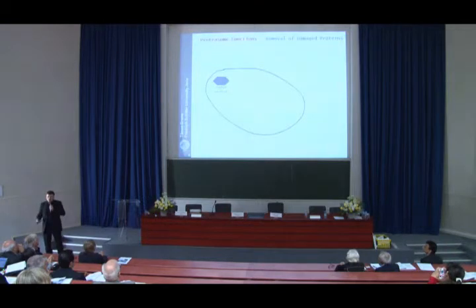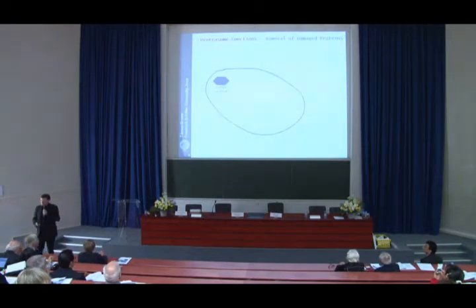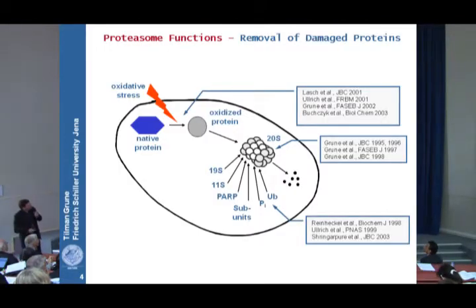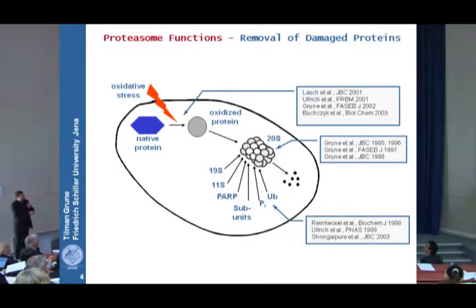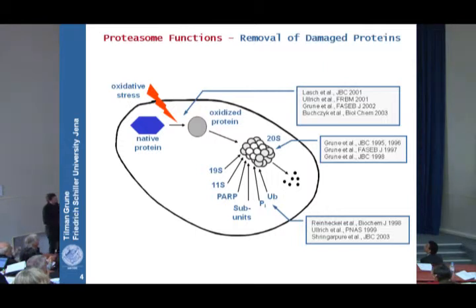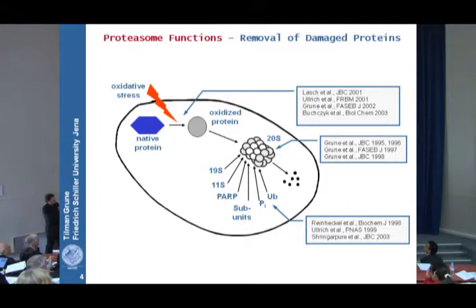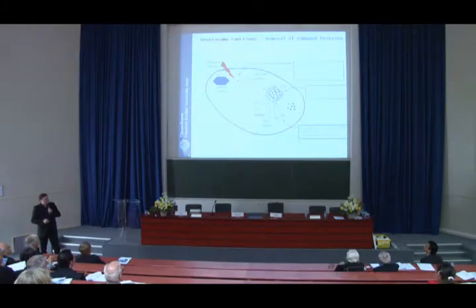You've already heard two talks introducing how normal proteins get oxidized during stress. They might then be degraded by the 20S proteasome in the cytosol or nucleus. The proteasome undergoes a number of regulatory steps — it's not just induced and always functioning the same way. There are a number of factors in the cell regulating the activity of the proteasomal system.